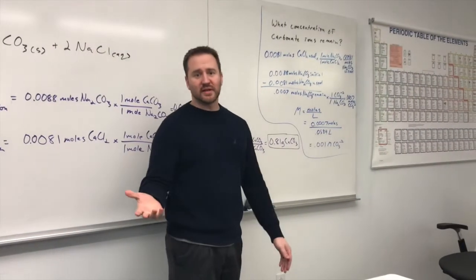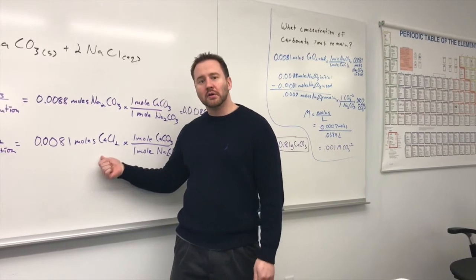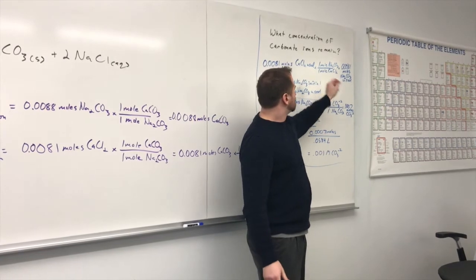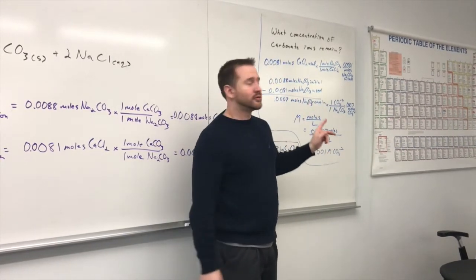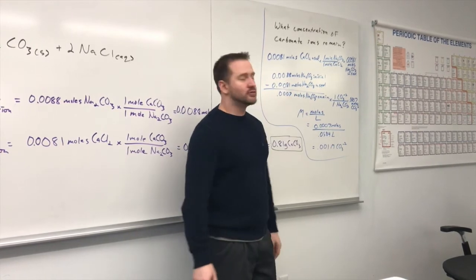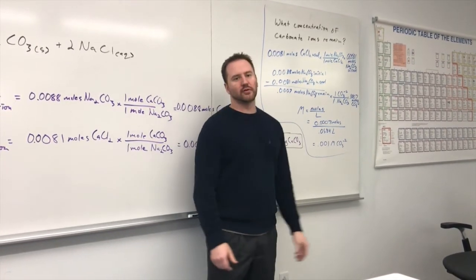So, what we do is the same thing as before. We know that we use up this many moles of calcium chloride. So from that, we can figure out how many moles of sodium carbonate we used, which is the same number of moles because it's a one-to-one ratio. Now, we take what we started with and subtract what we used and figure out that we only have 0.0007 moles of sodium carbonate remaining.